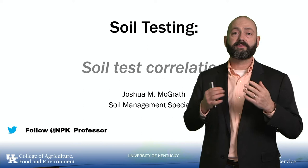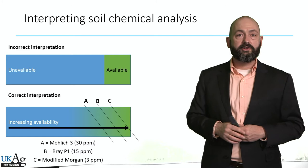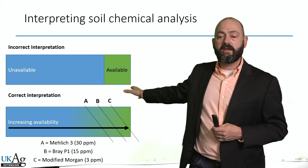When we interpret soil chemical analysis, there's an understanding that there's increasing availability of nutrients. There's not just a threshold above which nutrients are available and below which they're not available. Instead, we have this gradient of availability, and different tests get different slices of that.